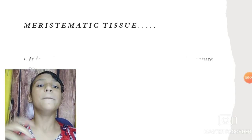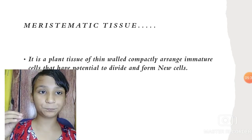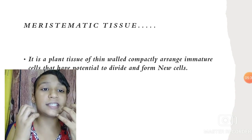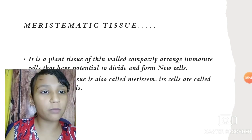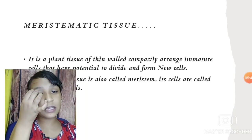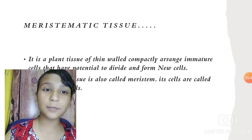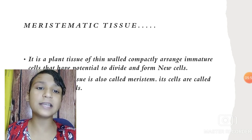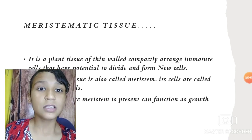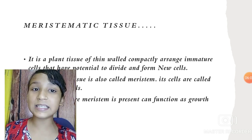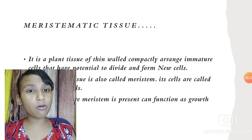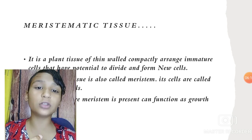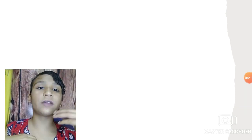Meristematic tissue is a thin-walled, compactly arranged part of mature cells whose function is to divide and form new cells, enabling growth for the plant. Meristematic tissue is also known as meristem, and its cells are called meristematic cells. The region where meristematic cells are present is called the growth region, because they are only found where growth is needed.